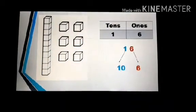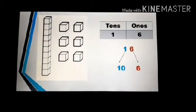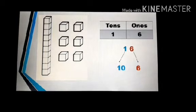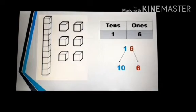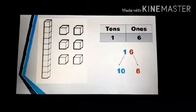The place value chart helps to find the value of a number. In each column, there can only be one digit.